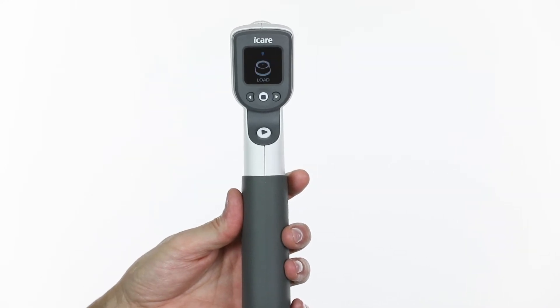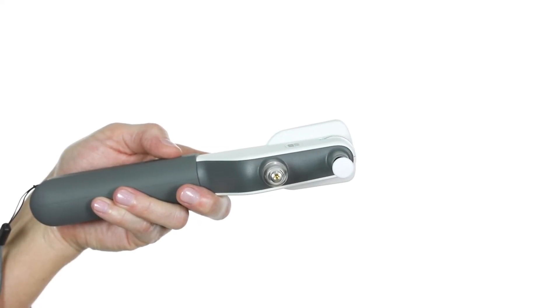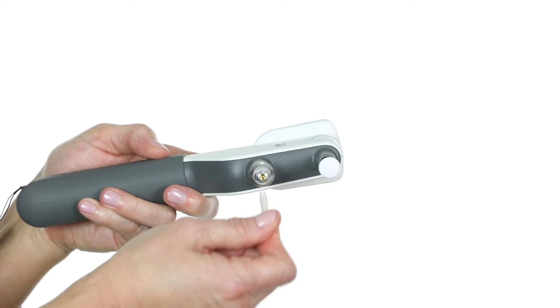Load the probe into the tonometer when the display screen shows load. Open the probe tube and insert the single-use probe into the probe base.